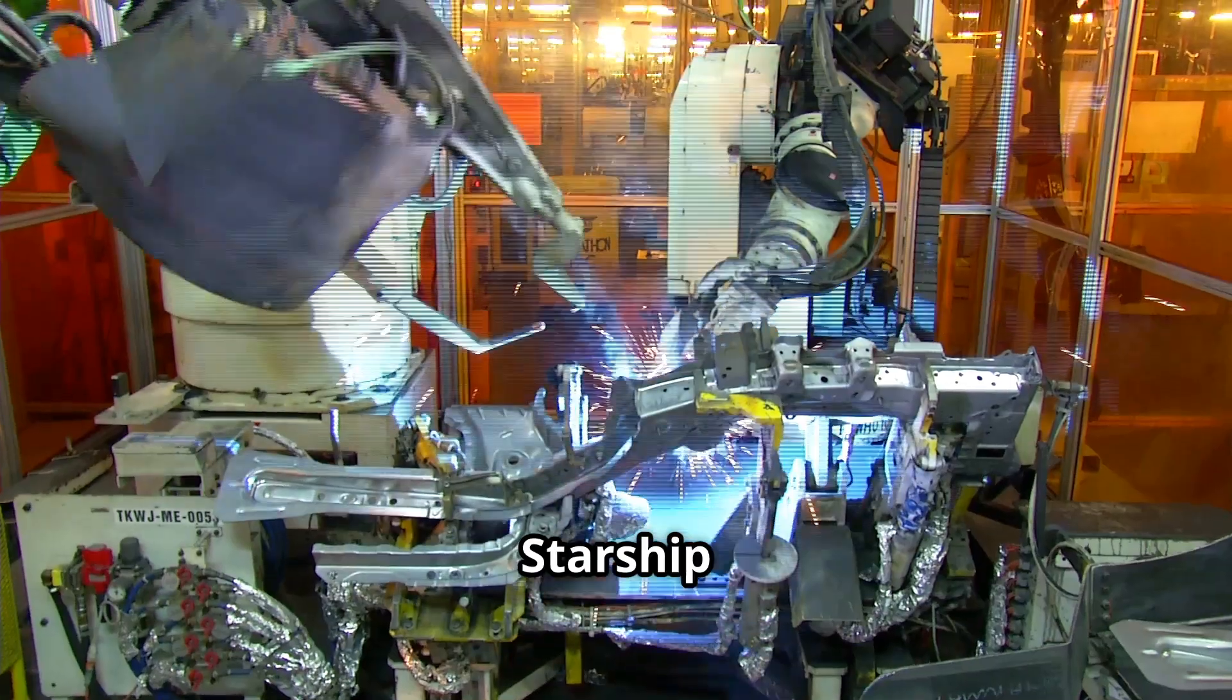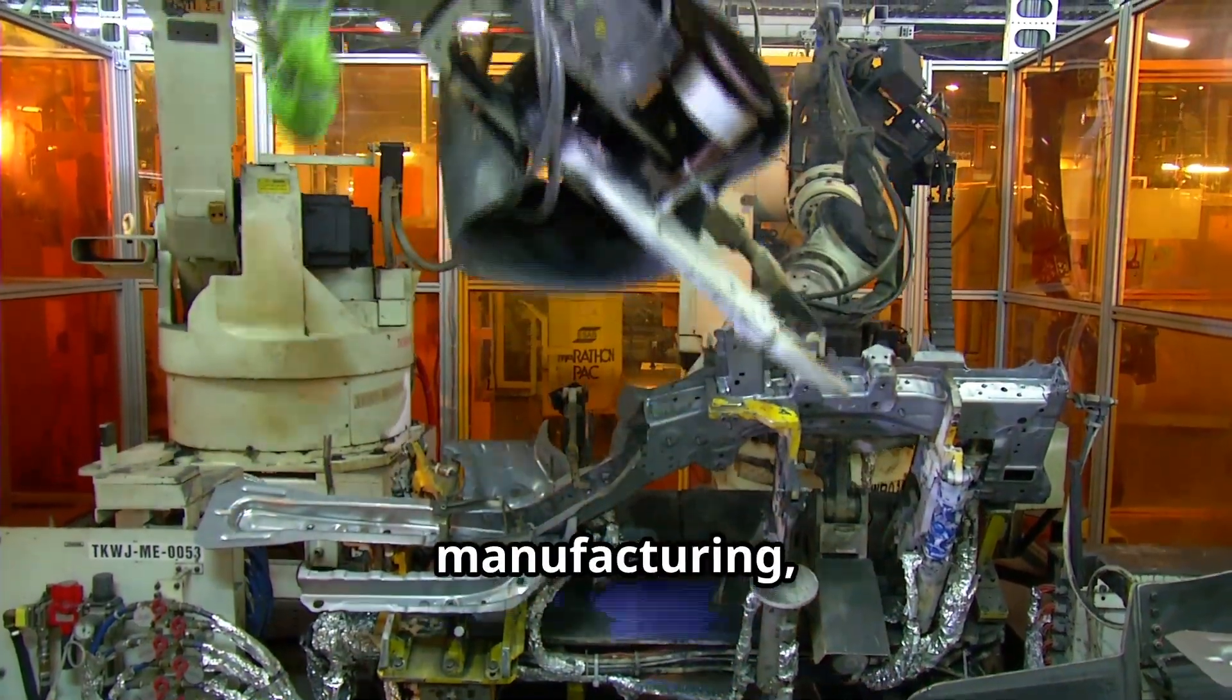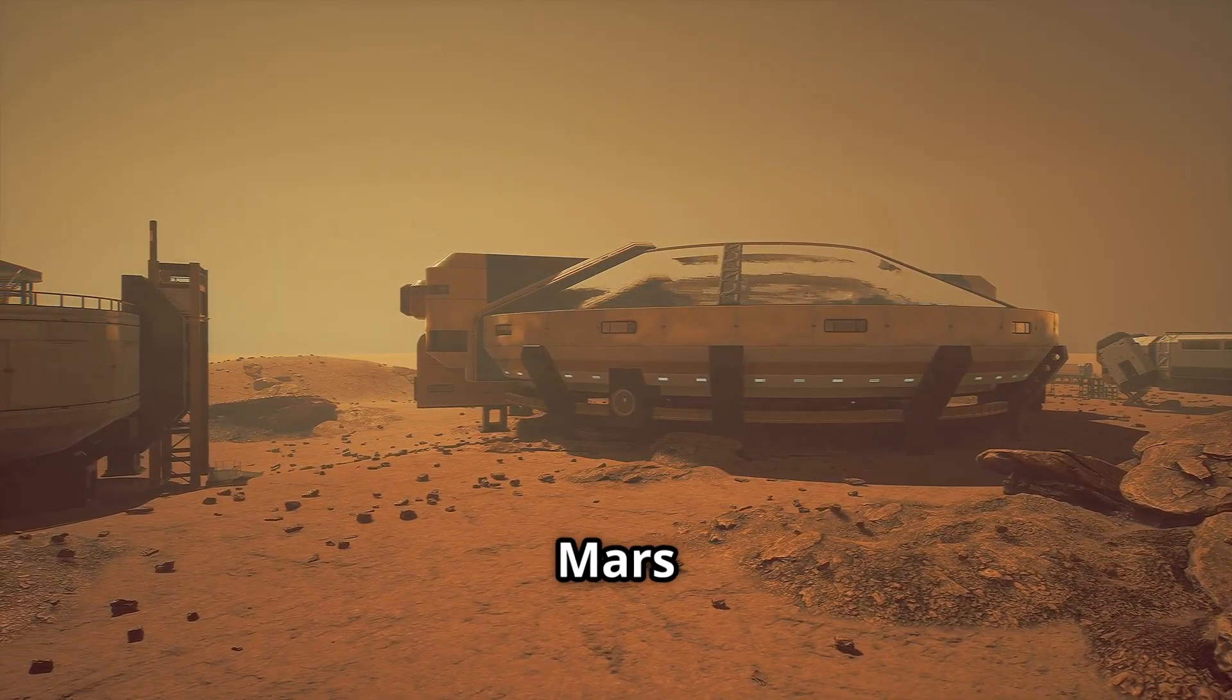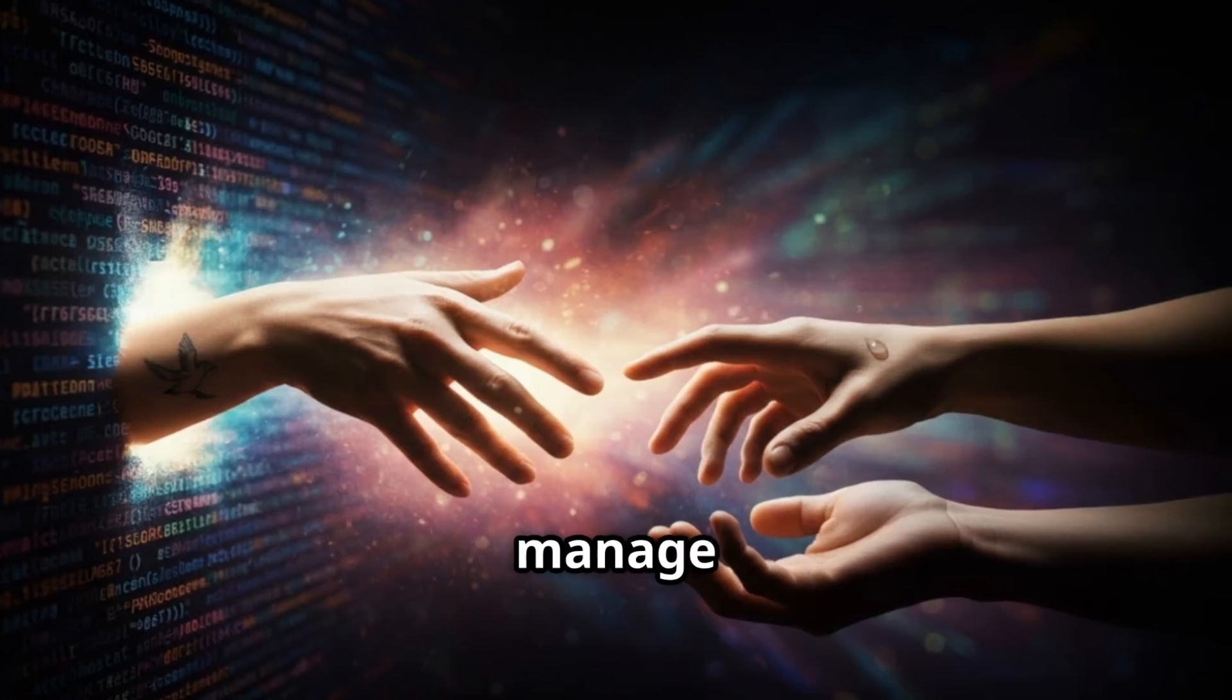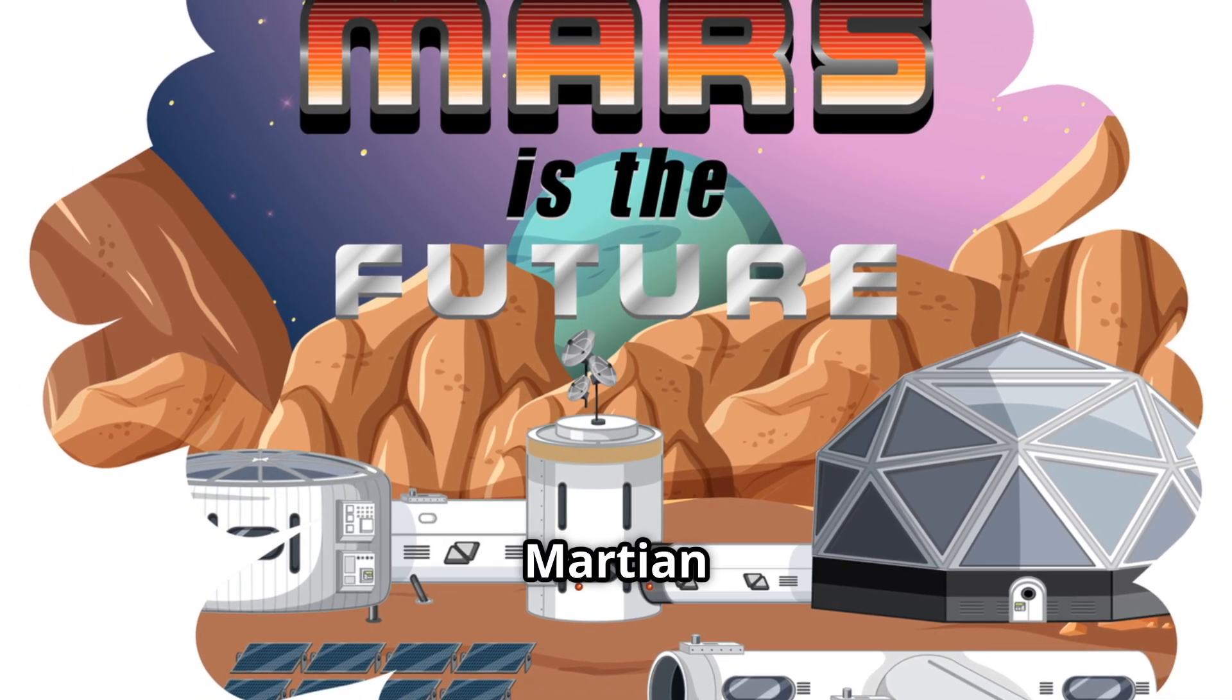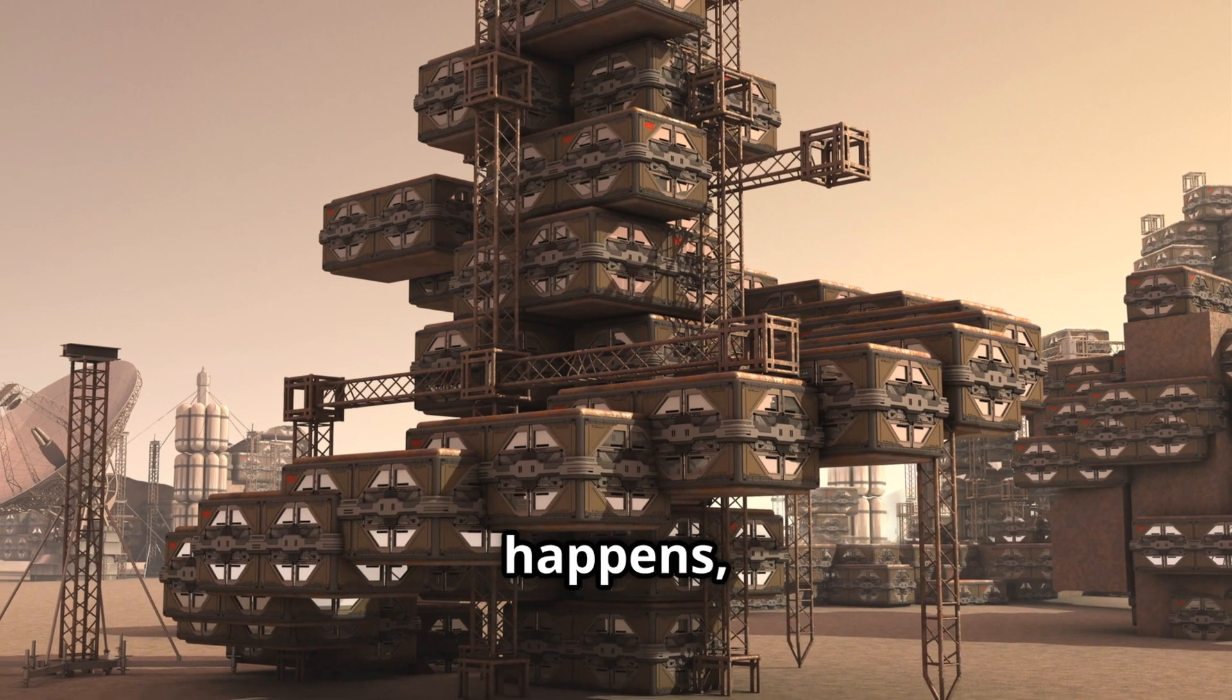Starship and beyond: Starship, the vehicle intended to take humans to Mars, is being built with AI-assisted manufacturing, including precision welding, stress testing, and thermal shielding evaluations. During future Mars missions, onboard AI will autonomously guide descent, deploy habitats, and manage life support systems. Once settled, AI will help manage agriculture, recycling, and communication across the Martian settlement. Musk's vision of one million people living on Mars may sound far-fetched, but if it happens, AI will be the foundation it's built upon.